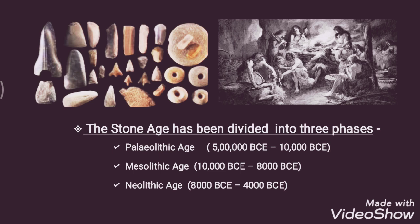The three phases are: first, the Paleolithic Age (Old Stone Age); second, the Mesolithic Age (Middle Stone Age); and third, the Neolithic Age (New Stone Age). The division of the Stone Age is based on the available tools and the level of refinement observed in the tools of each particular layer.